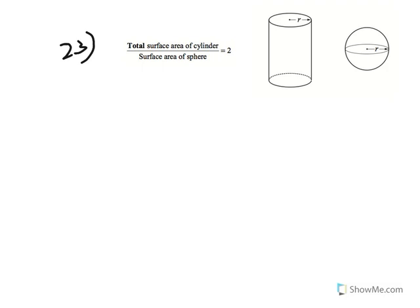Now the last question in this paper. They've given you a cylinder and a sphere, and told you that the total surface area of the cylinder over the surface area of the sphere equals 2. They ask you to find the ratio of the volume of the cylinder to the volume of the sphere.